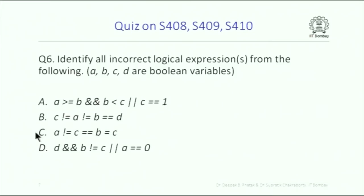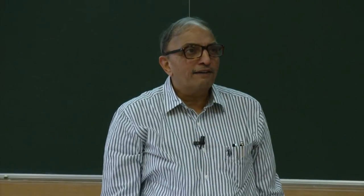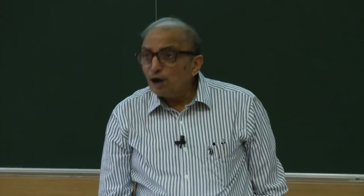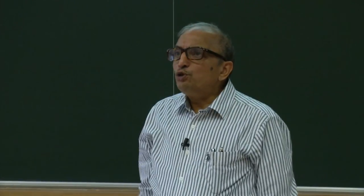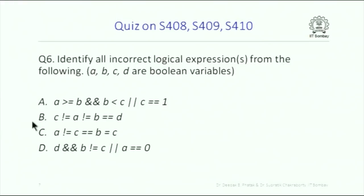A and C are incorrect. Why is A incorrect? Because of the less-than sign — you can't compare a boolean value with a relational less-than operator. Why is C incorrect? Because it has an assignment operation. The assignment operator has the lowest precedence, so all other operations will be done first. You then get a value on the left-hand side of the assignment and a variable on the right — you cannot assign anything to a value, only to a name. So the assignment operator on the left-hand side must have only a name.